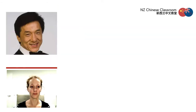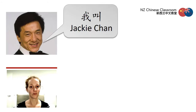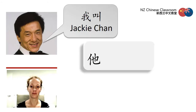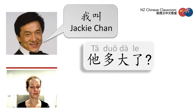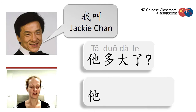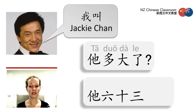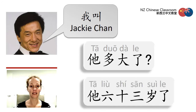Let's have a go at guessing some Chinese celebrities' ages. 这是谁? 我叫Jackie Chan. 他多大了? 你知道吗? Maybe pause the video and try to guess by creating the sentence. 他63岁了. How close were you?